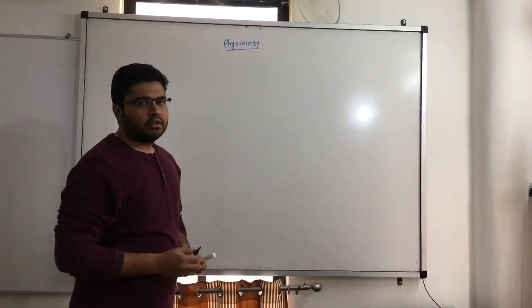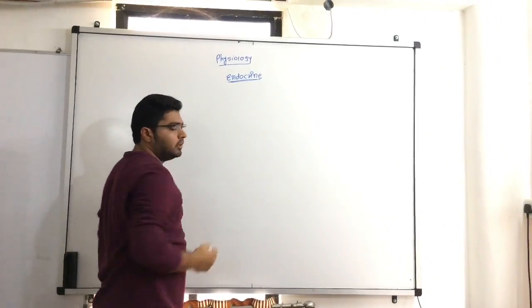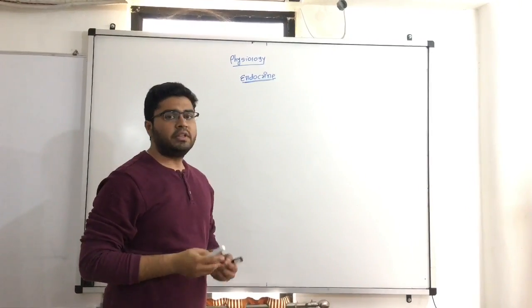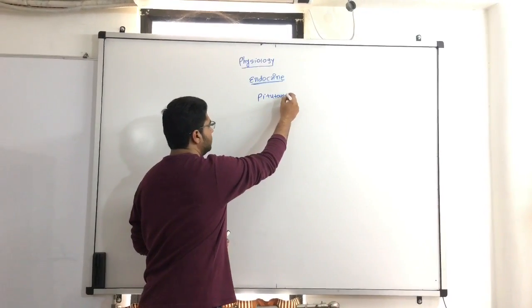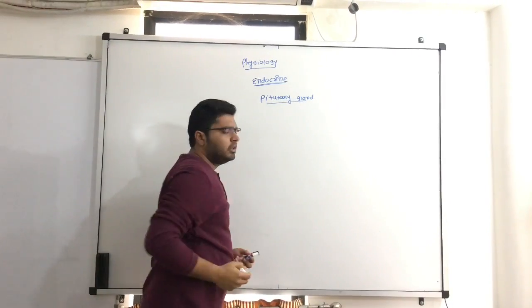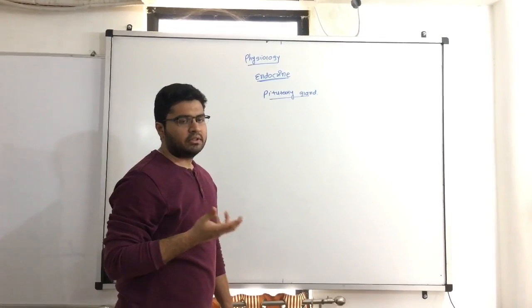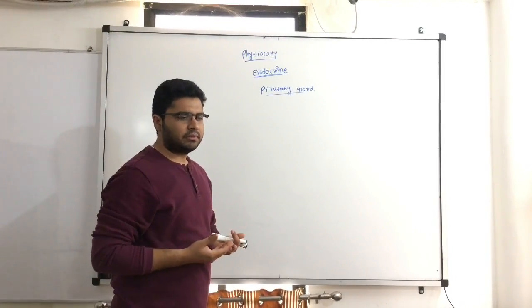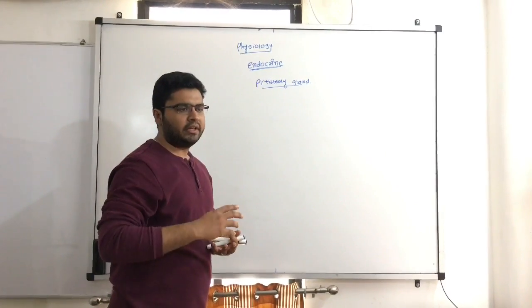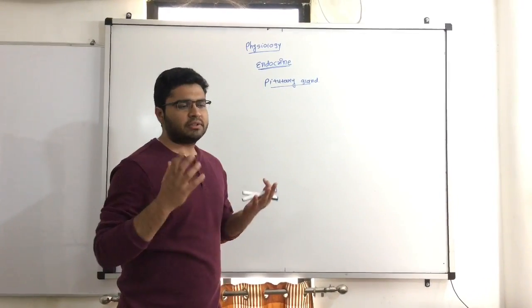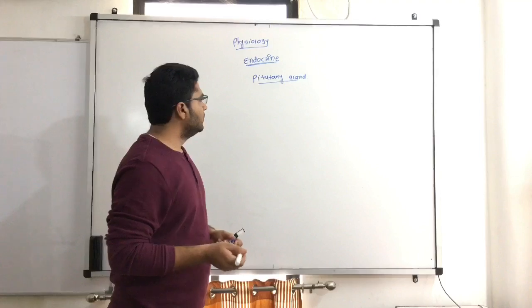Let's discuss endocrine physiology. The endocrine system includes glands which secrete their material directly into the blood — that is why they are called endocrine glands. A hormone is any chemical substance produced by cells, released into the circulation, and it reaches its target portion and acts on that part. These chemical substances are produced by the glands and reach different sites. Let's now discuss the pituitary gland.